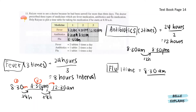For antibiotics, one tablet two times a day. 24 hours divided by 2 gives 12 hours. Starting at 8.30am plus 12 hours will be 8.30pm. So the timetable is 8.30am and 8.30pm. For the flu medication, one tablet one time a day. So that's just one tablet at 8.30am.